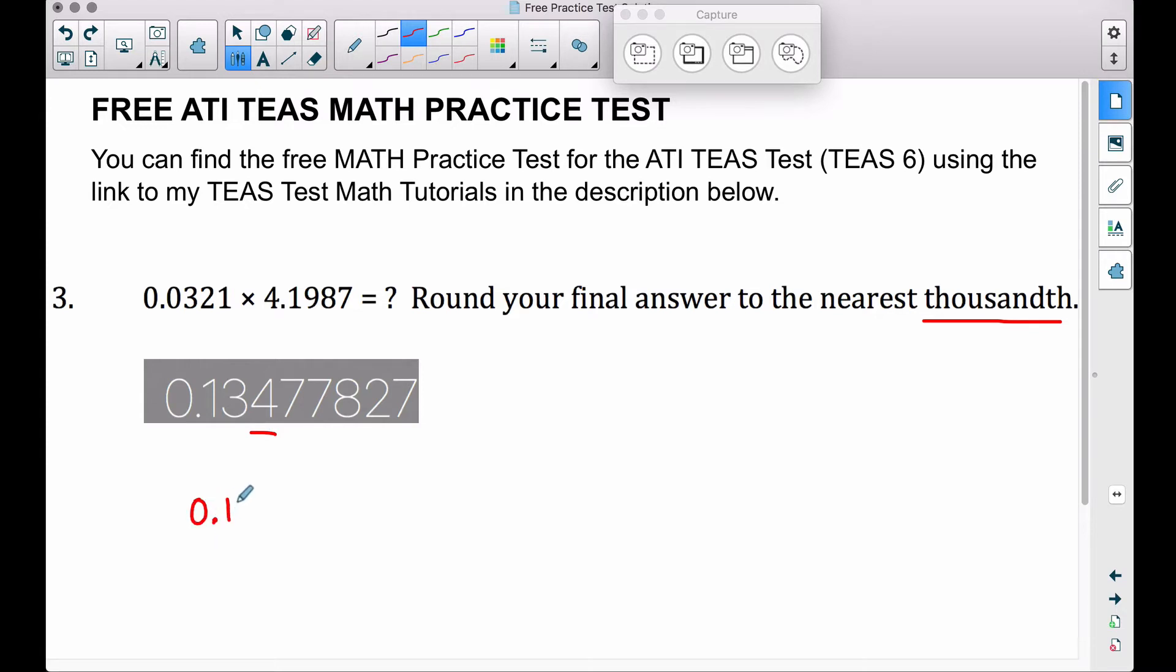And since this number to the right is a seven, which is five or higher, we will round this four up to a five. Therefore, our product is going to be 0.135 when we round this.